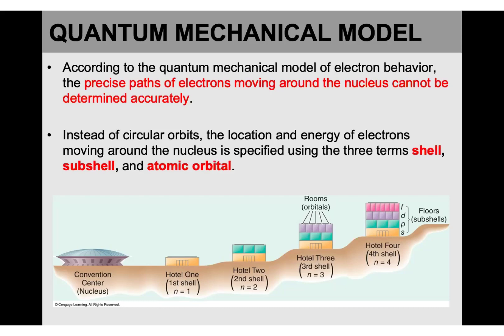For example, if I give you my address and I just tell you I'm living in Chula Vista, you might ask: where in Chula Vista? Which street? What's your home number? This quantum mechanical model tells us more details about the address of electrons and tells us where we can find electrons inside atoms.